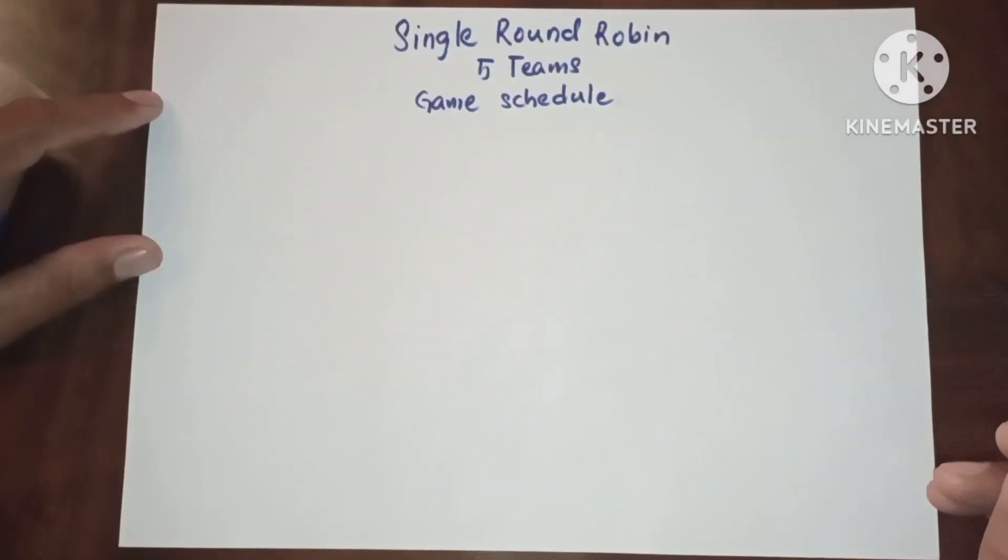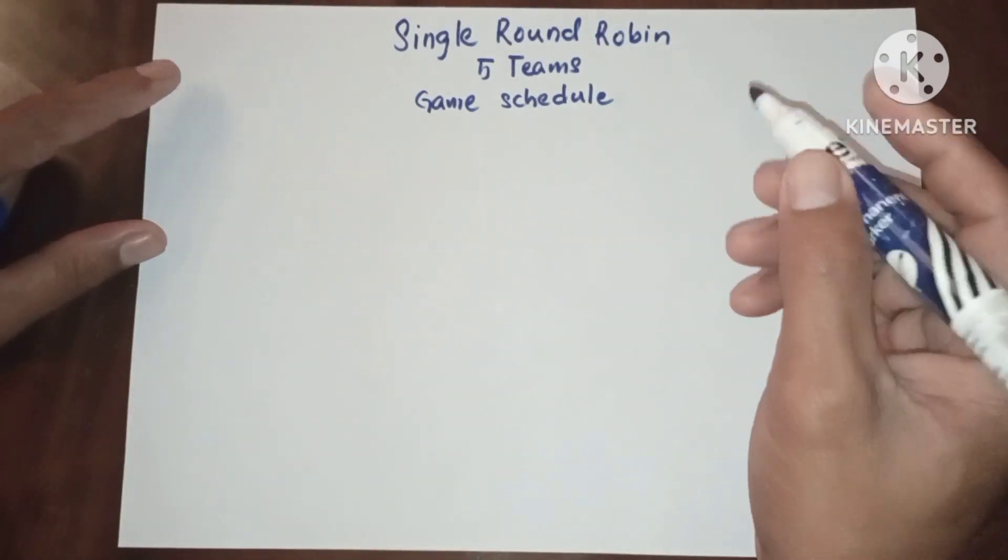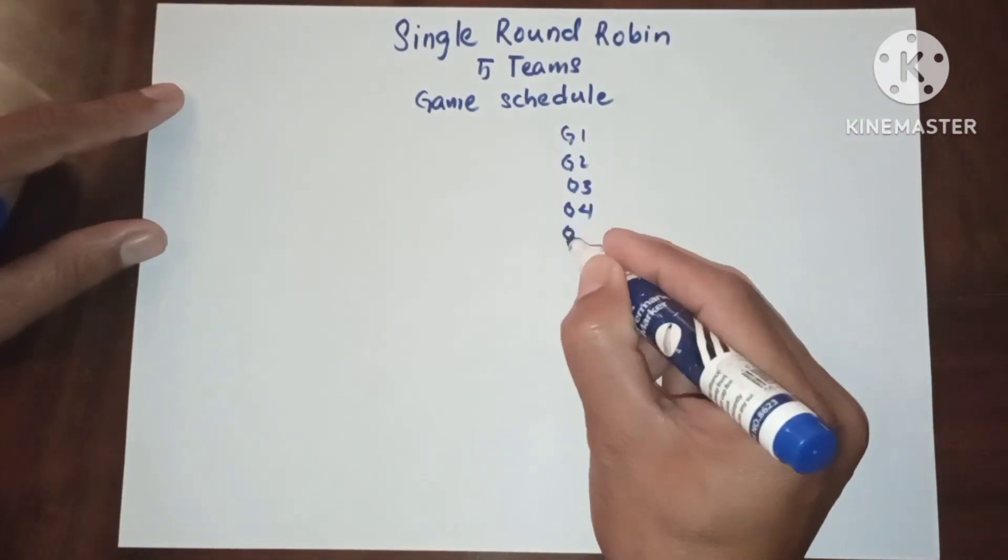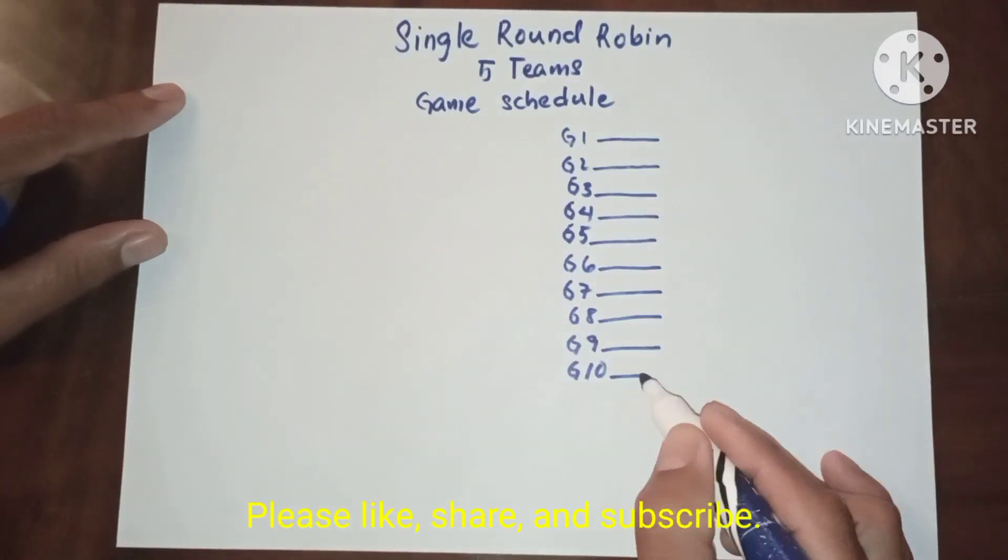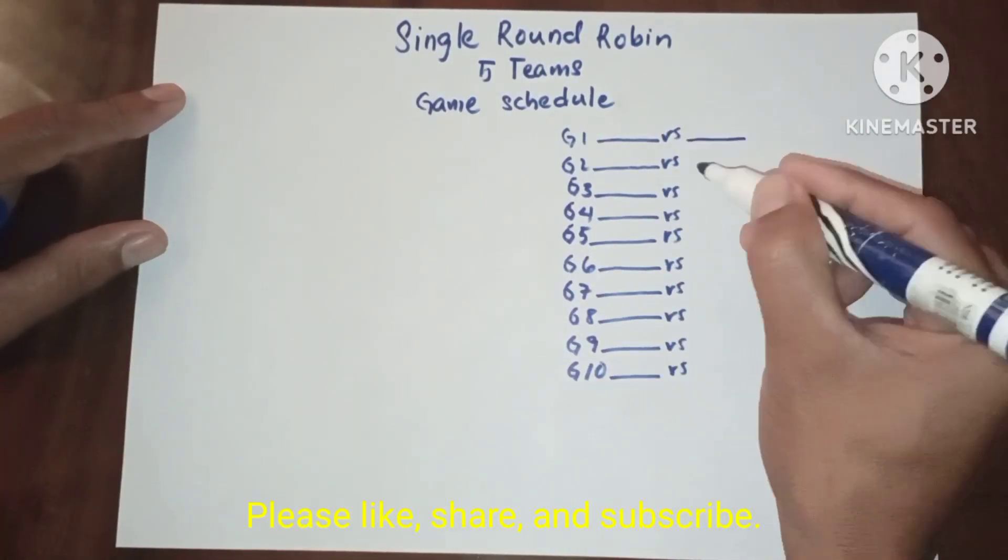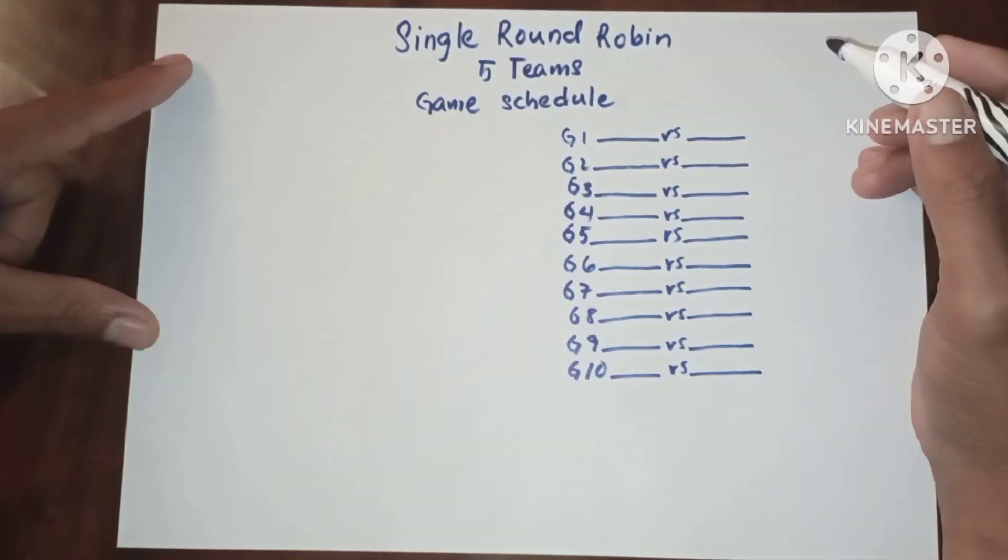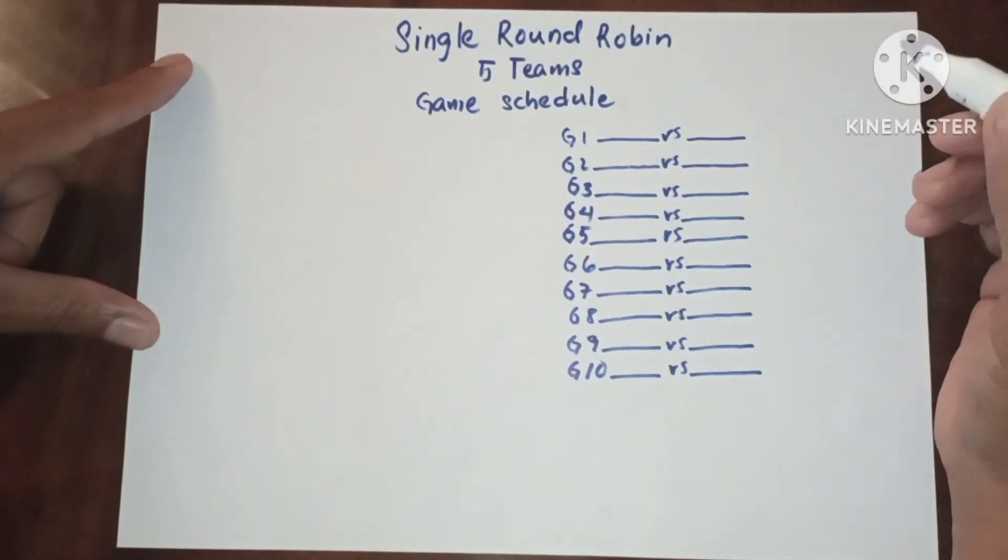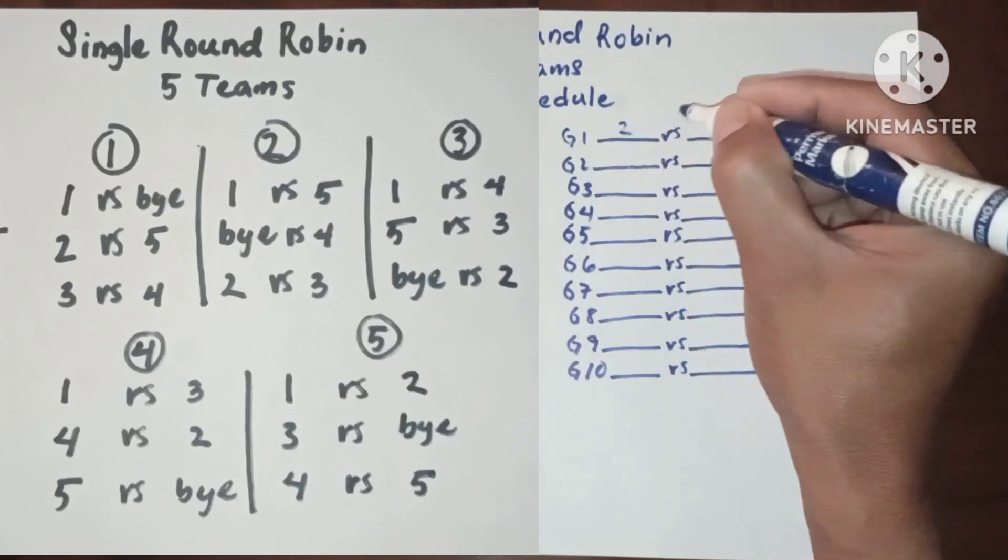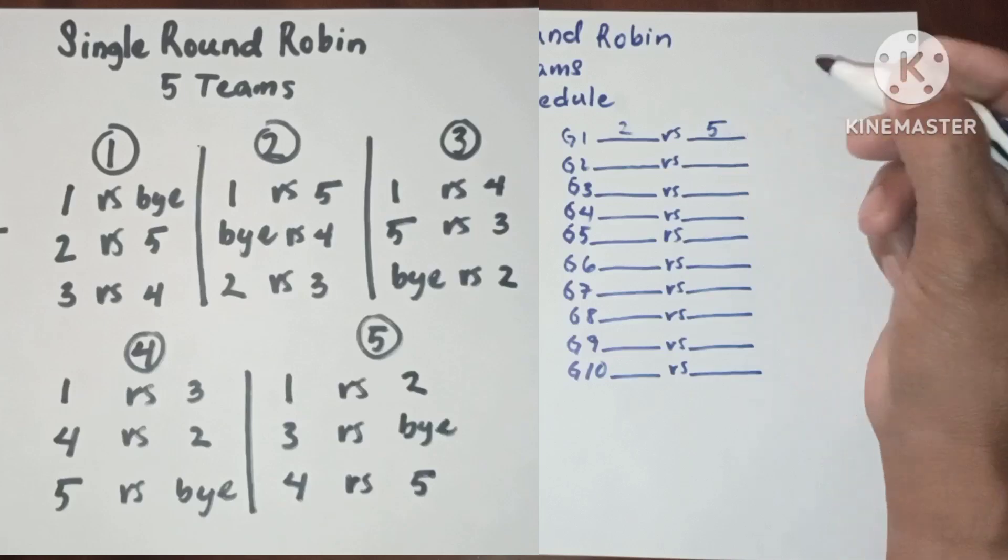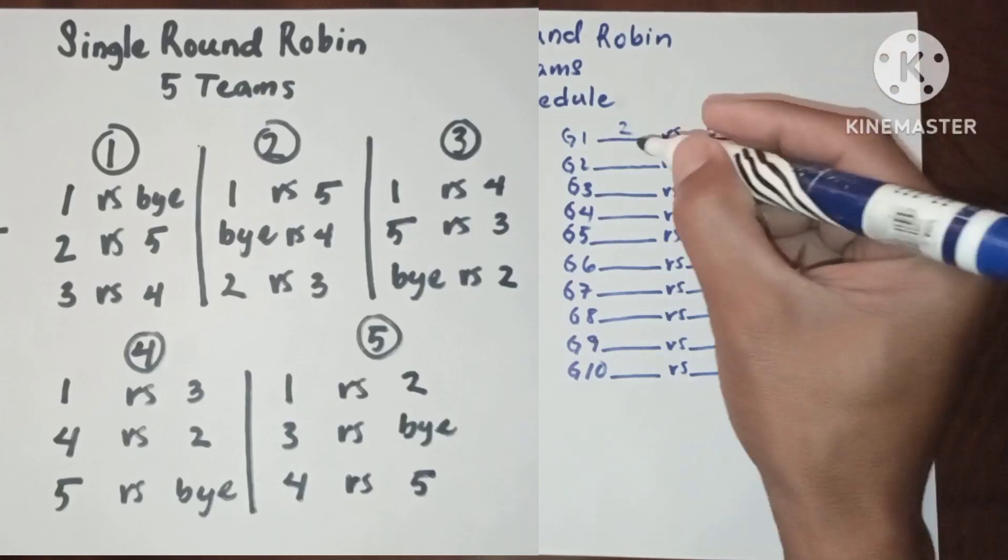Now let's proceed to game schedule. Since we have ten games, let's focus on round one. In round one we have two versus five, three versus four.